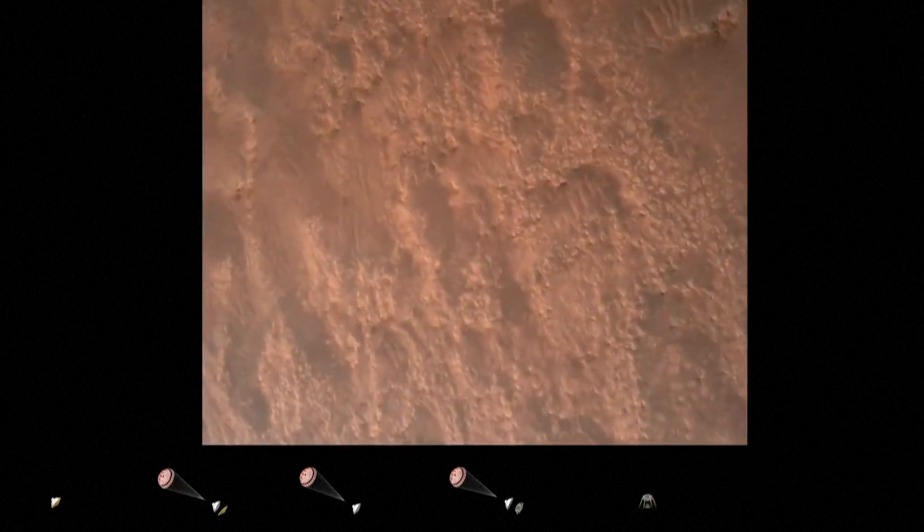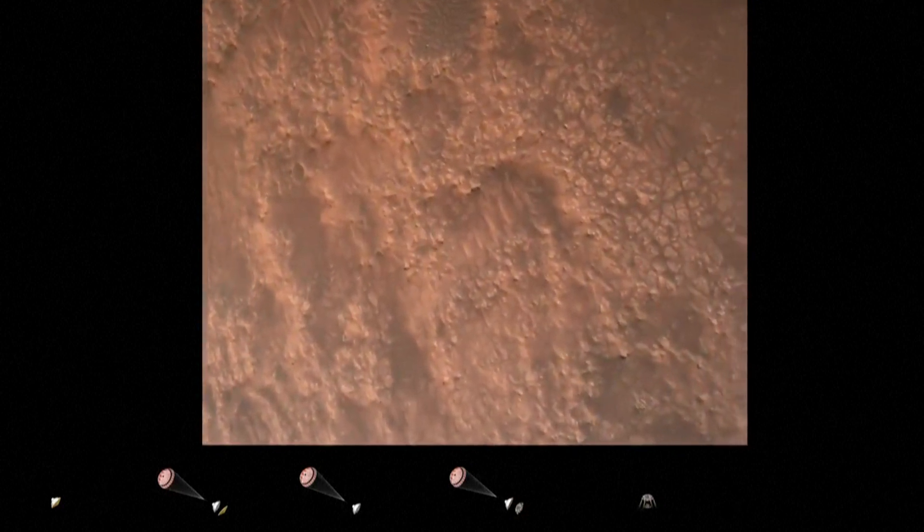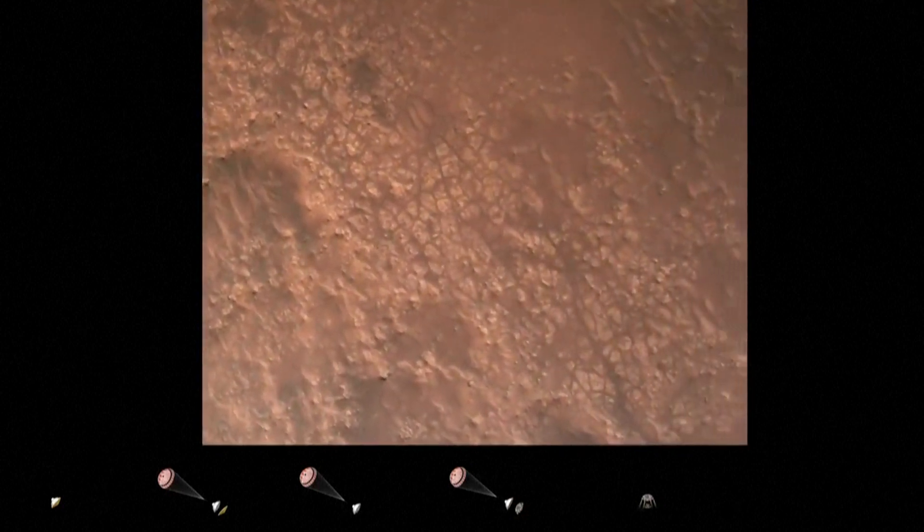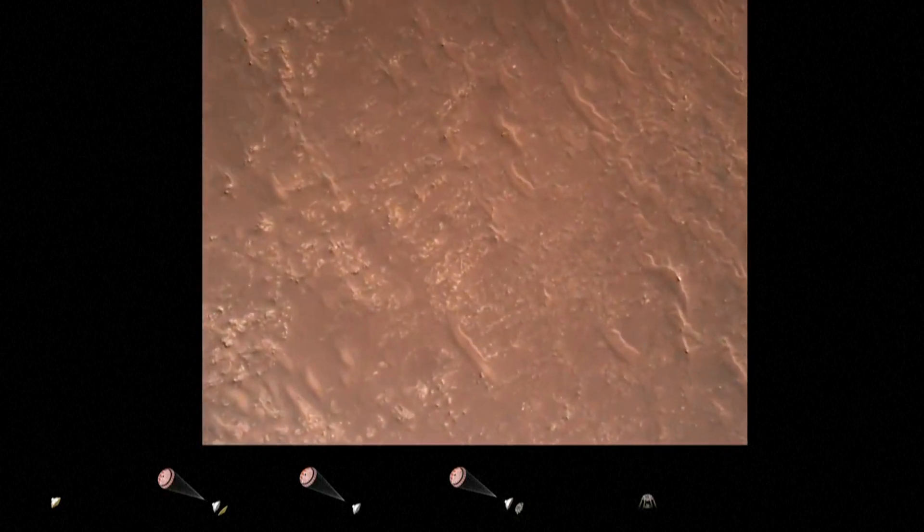TRN safety Bravo. We have completed our terrain relative navigation. Current speed is about 30 meters per second at an altitude of about 300 meters off the surface of Mars.